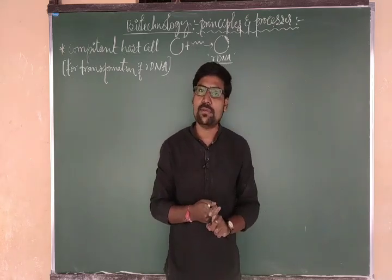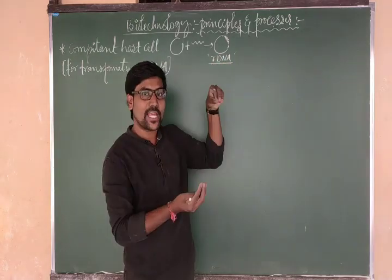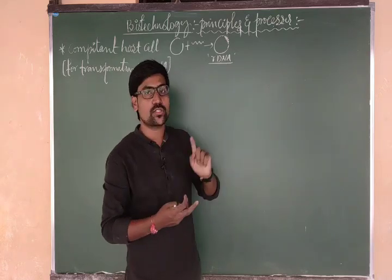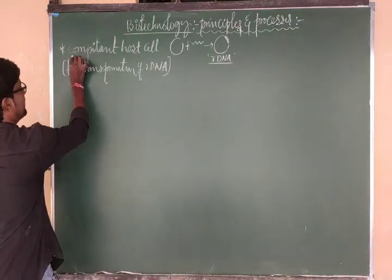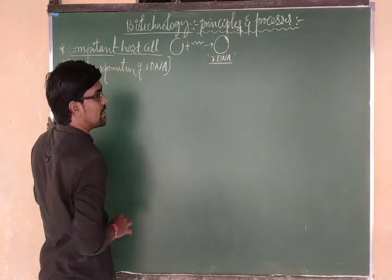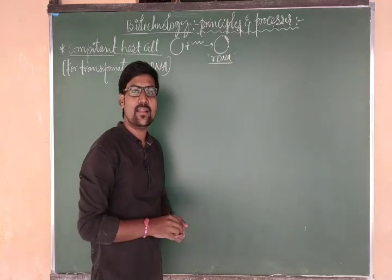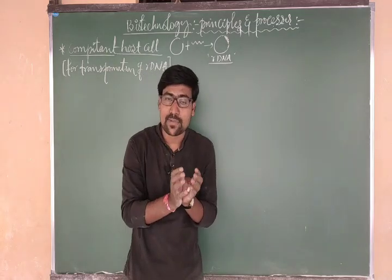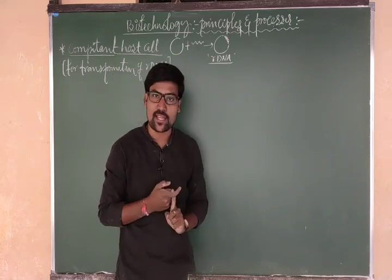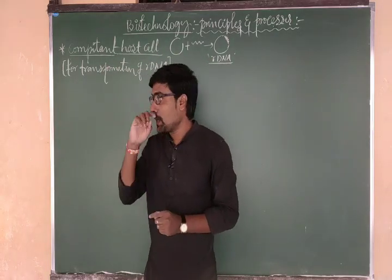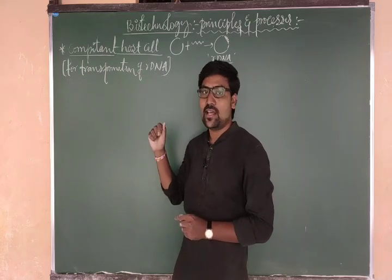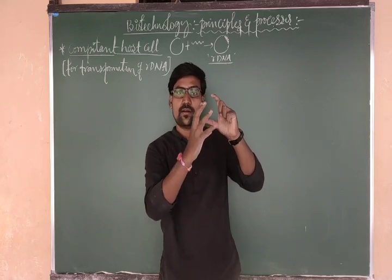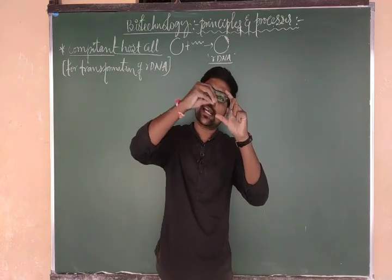Here is a problem: rDNA on its own simply cannot enter inside the host cell — it is a difficult process. To receive that rDNA, we need to make the host cell competent. Transformation means the transferring of DNA from one source to another — from an outer source into the bacterial cell. We already observed the transformation principle in Griffith's experiment: transferring of DNA from S strain to R strain.